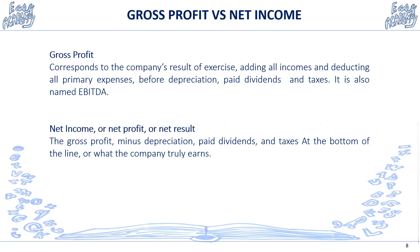The gross profit corresponds to the company's result, adding all incomes and deducting all primary expenses, before depreciation, paid dividends, taxes, and interest. It is also named EBITDA — earnings before interest, taxes, depreciation, and amortization. The net income, which is what interests most investors, managers, and everyone within the company, is the gross profit minus depreciation, minus paid dividends, minus taxes and interest. It shows what the company truly earns.